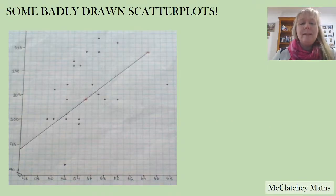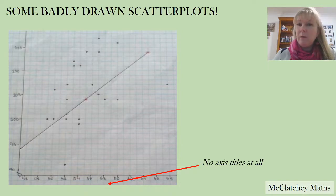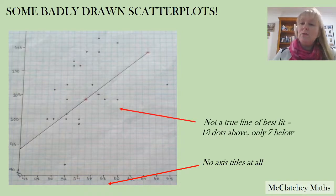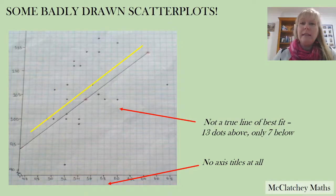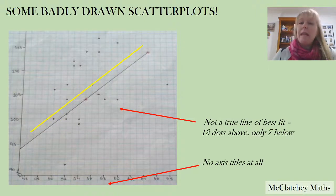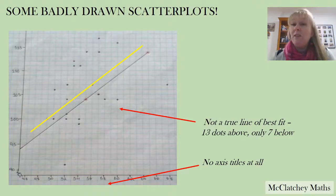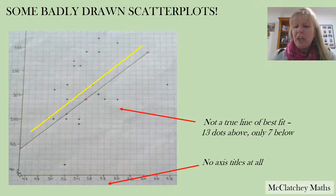This last example is a little blurry but they've done a fairly nice job of graphing. However, they haven't got any axis titles, so that would lose about a mark. Also this is not a true line of best fit — there are 13 dots above the line and only seven below, so there's twice as many above as below. A better line of best fit would pass a little higher, passing through at least two points, giving a much more even spread. If someone used this line, they would have got the wrong y-intercept, and that changes predictions quite a lot.